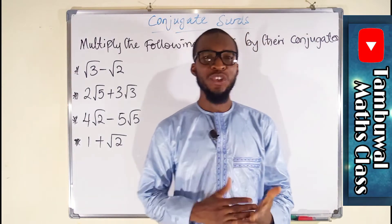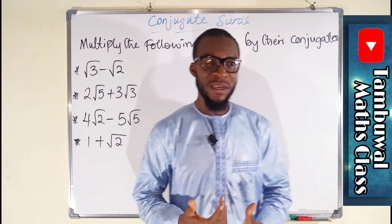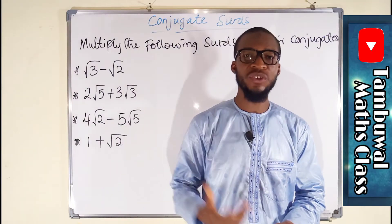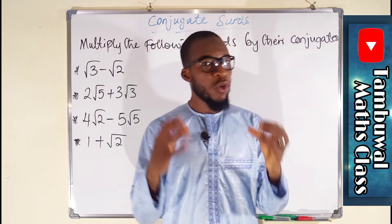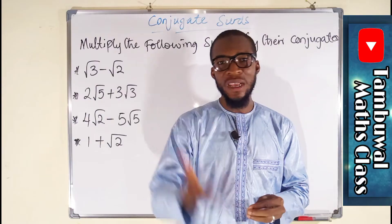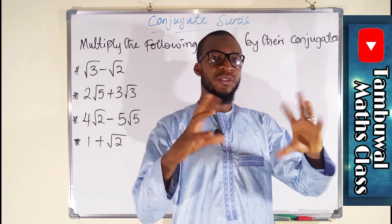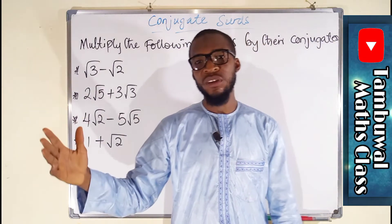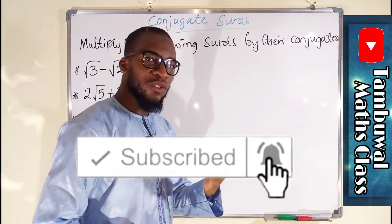In this tutorial we are going to multiply surds by their conjugates. But before then, let us discuss more about these conjugates. Two surds are said to be conjugate of one another if and only if their product gives rise to a rational number, because surds are said to be irrational, but their product, if they are conjugate, will give rise to a rational number.